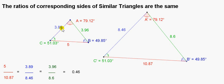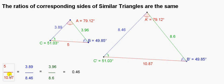We could do the same for the blue sides. We could take the blue side of the small triangle and divide it by the blue side of the larger triangle — we get 3.89 divided by 8.46. And finally, if we look at the green side of the small triangle and divide it by the green side of the large triangle, we get the third ratio of corresponding sides. We will find that these three ratios are the same — in this case, the ratio is 0.46.